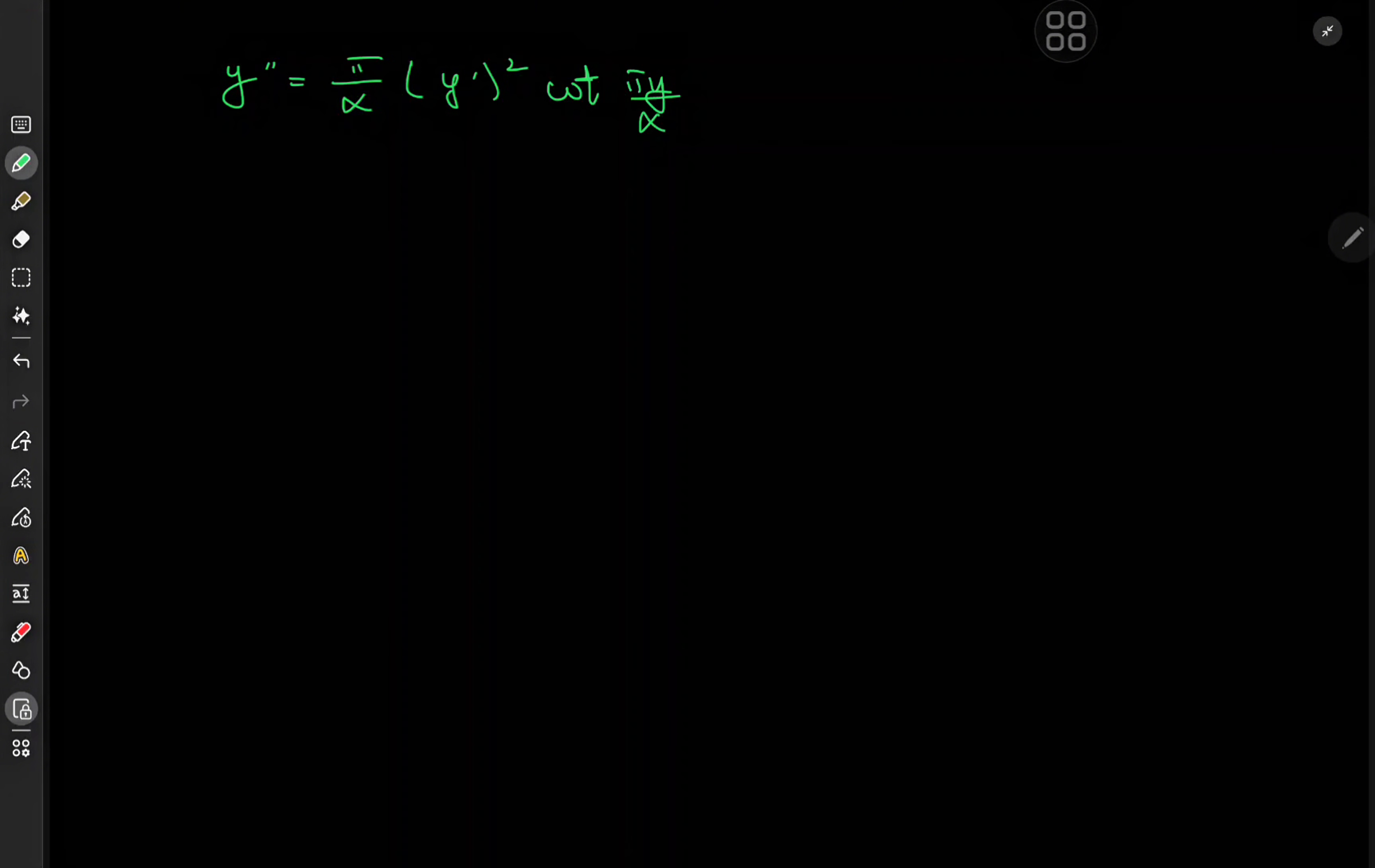The first thing we notice here is that the x term is missing explicitly, so we might as well invoke the substitution letting y prime equal to u. And this implies that y double prime is equal to du over dx.